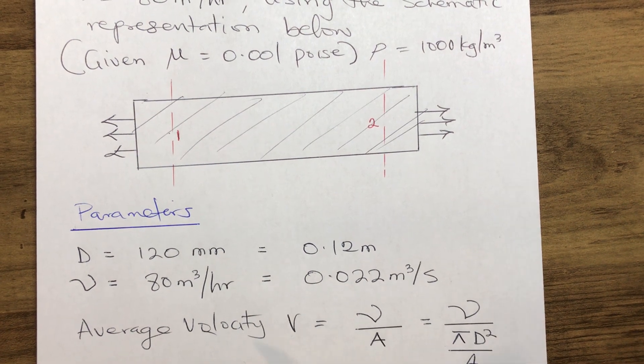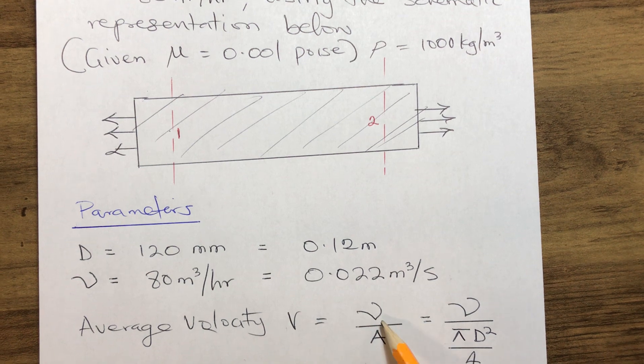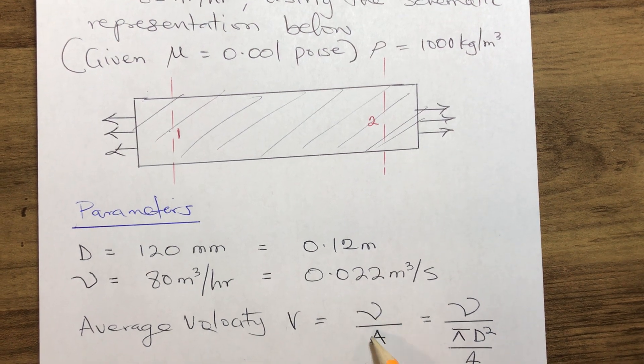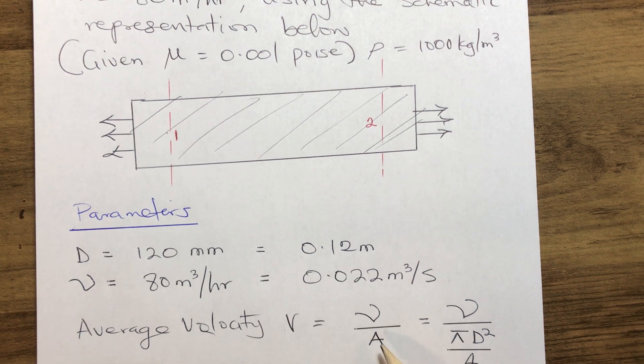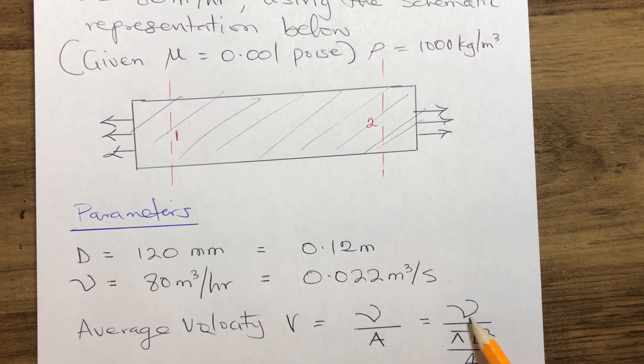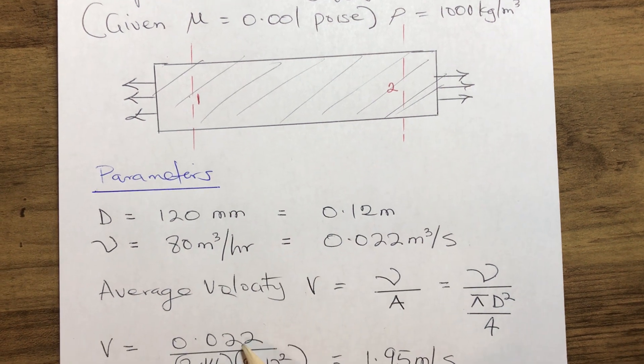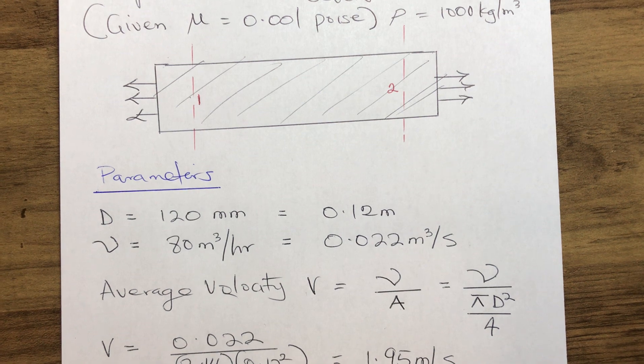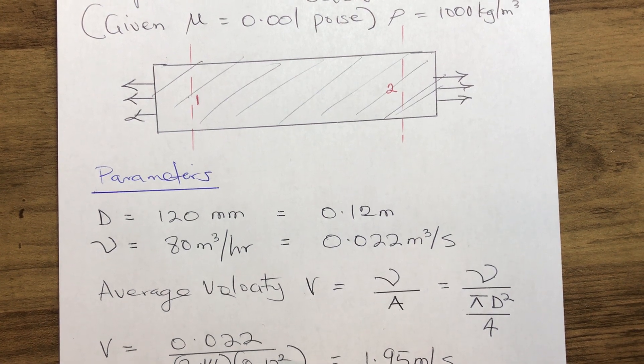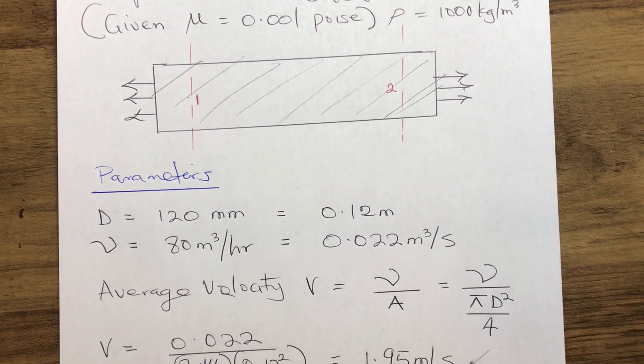Now, how do we calculate the average velocity? Average velocity V = flow rate / area = Q / A = Q / (πD²/4). So V = 0.022 / (3.14 × 0.12² / 4) = 1.95 m/s.